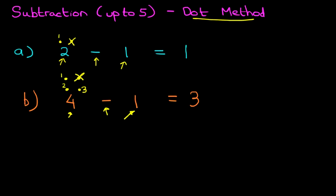So how many dots does that leave? Well, let's count them: 1, 2, 3. That leaves 3 dots. And that is our answer: 4 minus 1 equals 3.